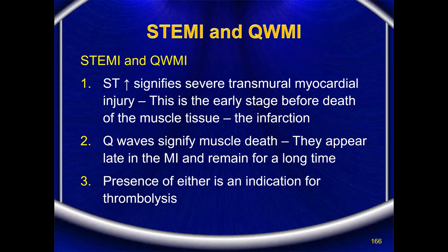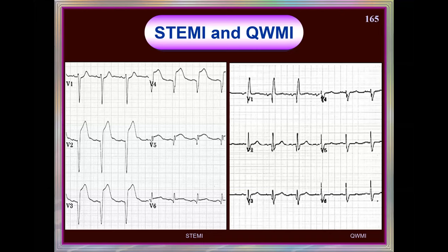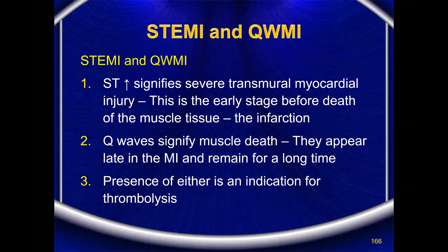ST elevation signifies severe transmural injury through the full thickness of the myocardium — this is the early stage before muscle death. Once infarction sets in, Q waves appear. The injury is severe enough to produce ST elevation; Q waves signify muscle death and appear late in MI, remaining for a longer period. The presence of either ST elevation or Q waves is an indicator for thrombolysis or elective vessel patency procedures.